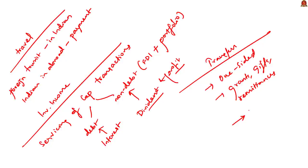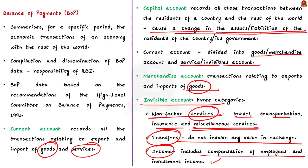Similar transfers by our government to other countries are also recorded under official transfer payments. Compensation of employees includes wages received by Indians working on foreign contracts, and it includes payment of wages or salary to non-residents who are working in India. These are some of the areas that are in the invisibles account or the service account within the current account.